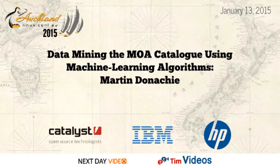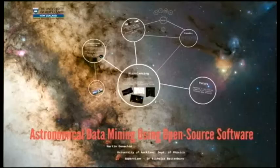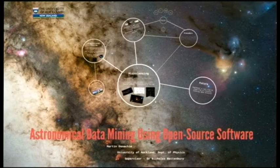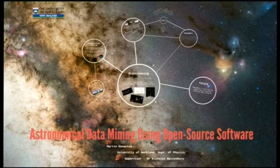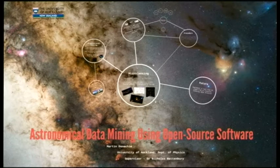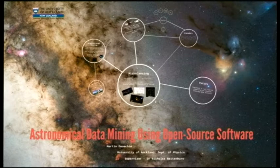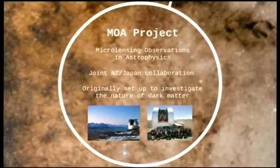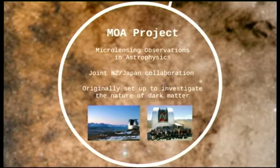Good afternoon, everyone. My name is Martin Donicky. I'm a master's student working with Dr. Nick Rattenbury at the University of Auckland, Department of Physics. I'm working in the area of gravitational microlensing. The particular project I'm working on at the moment is a data mining project using open source software. I'm working with the MOA catalogue. So you've probably heard a bit about MOA today. MOA is the Microlensing Observations in Astrophysics, which is a joint New Zealand-Japan collaboration, originally set up to investigate the nature of dark matter.